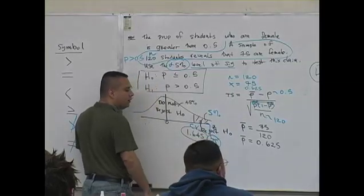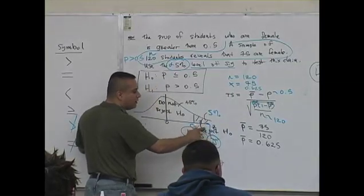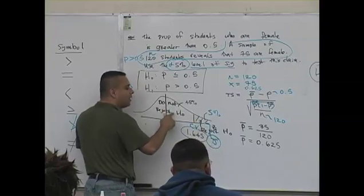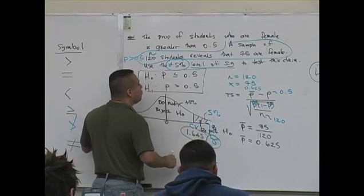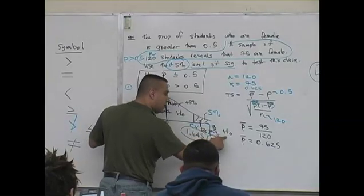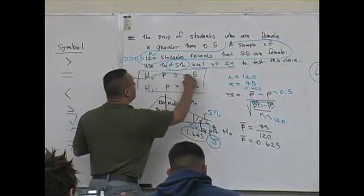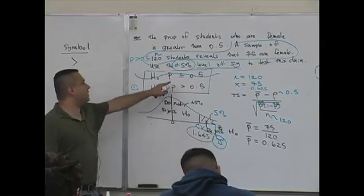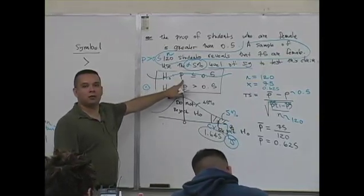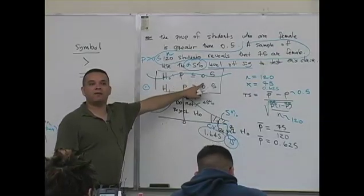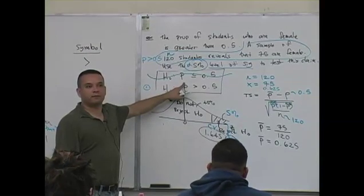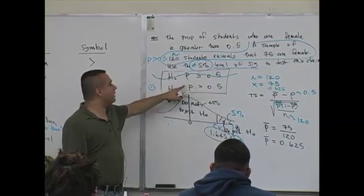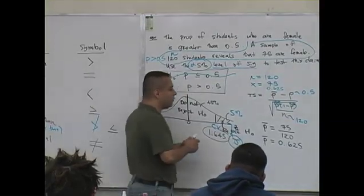What neighborhood does that test statistic live in? Does it live in the do not reject the null or does it live in the reject the null? So we're going to reject the null. What is the null? It's a statement that the proportion is less than or equal to 0.5, the proportion of students who are female. So if we reject the null, the answer is going to be this. This is what you conclude.